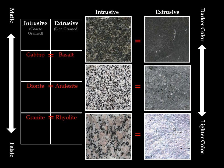Note the change in color as the rocks transition from mafic to felsic. Look at how much darker in color the mafic rocks are compared to the felsic rocks. Basalts are very dark gray to black, where rhyolites are very light tan to white.